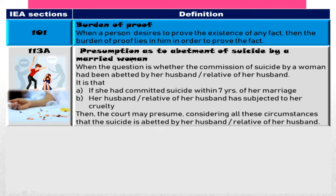Section 113A IEA talks about presumption as to abetment of suicide by a married woman. When the question is whether the commission of suicide by a woman had been abetted by her husband or a relative of her husband — if she committed suicide within seven years of marriage and had also been subjected to cruelty — the court presumes that the husband is the reason for her suicide.